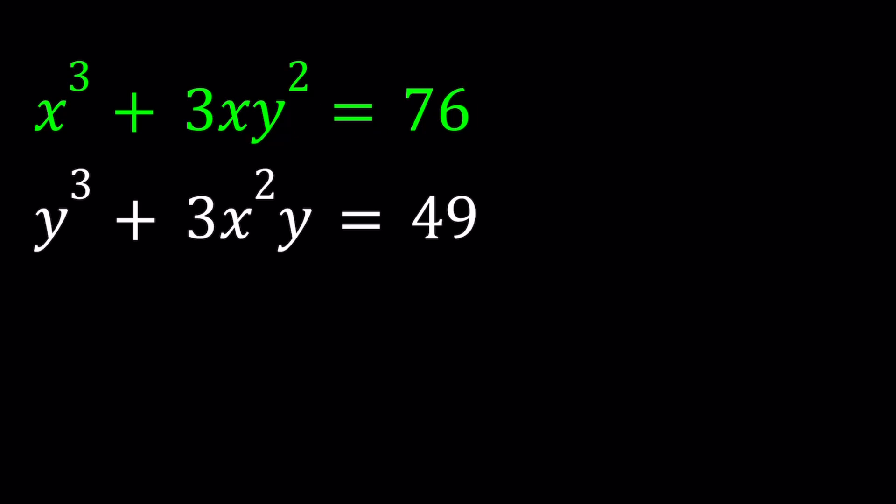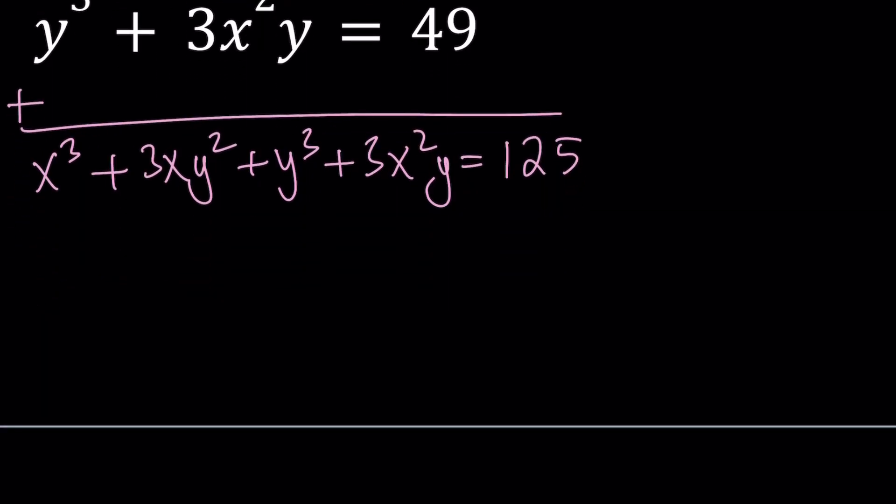Alright, let's go ahead and solve this system. First of all, you probably noticed that when these terms are all put together, they're going to make up something nice. We're going to be using the binomial theorem by adding these two equations side by side because that's going to give us x cubed plus 3xy squared plus y cubed plus 3x squared y equals 76 plus 49 which is equal to 125.